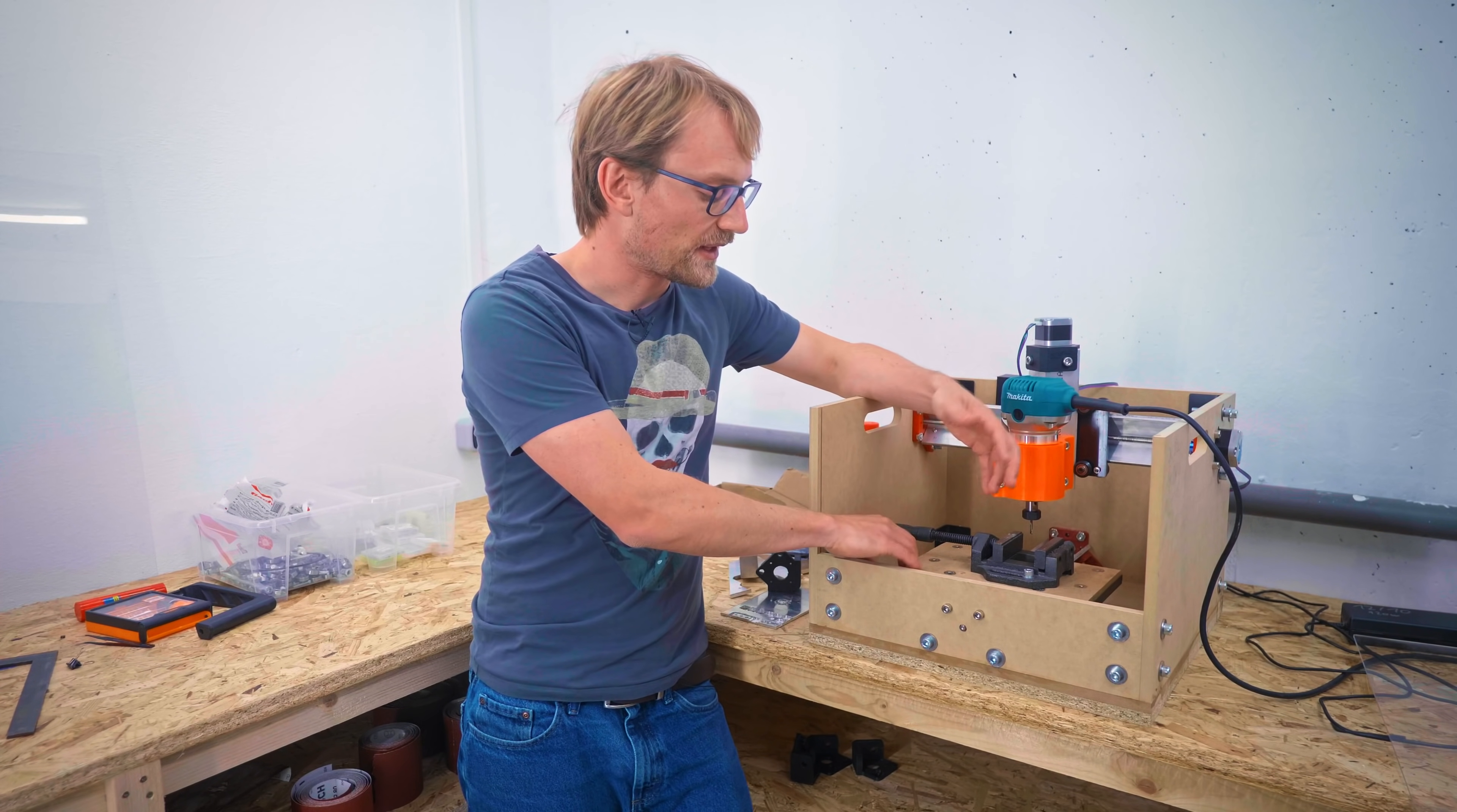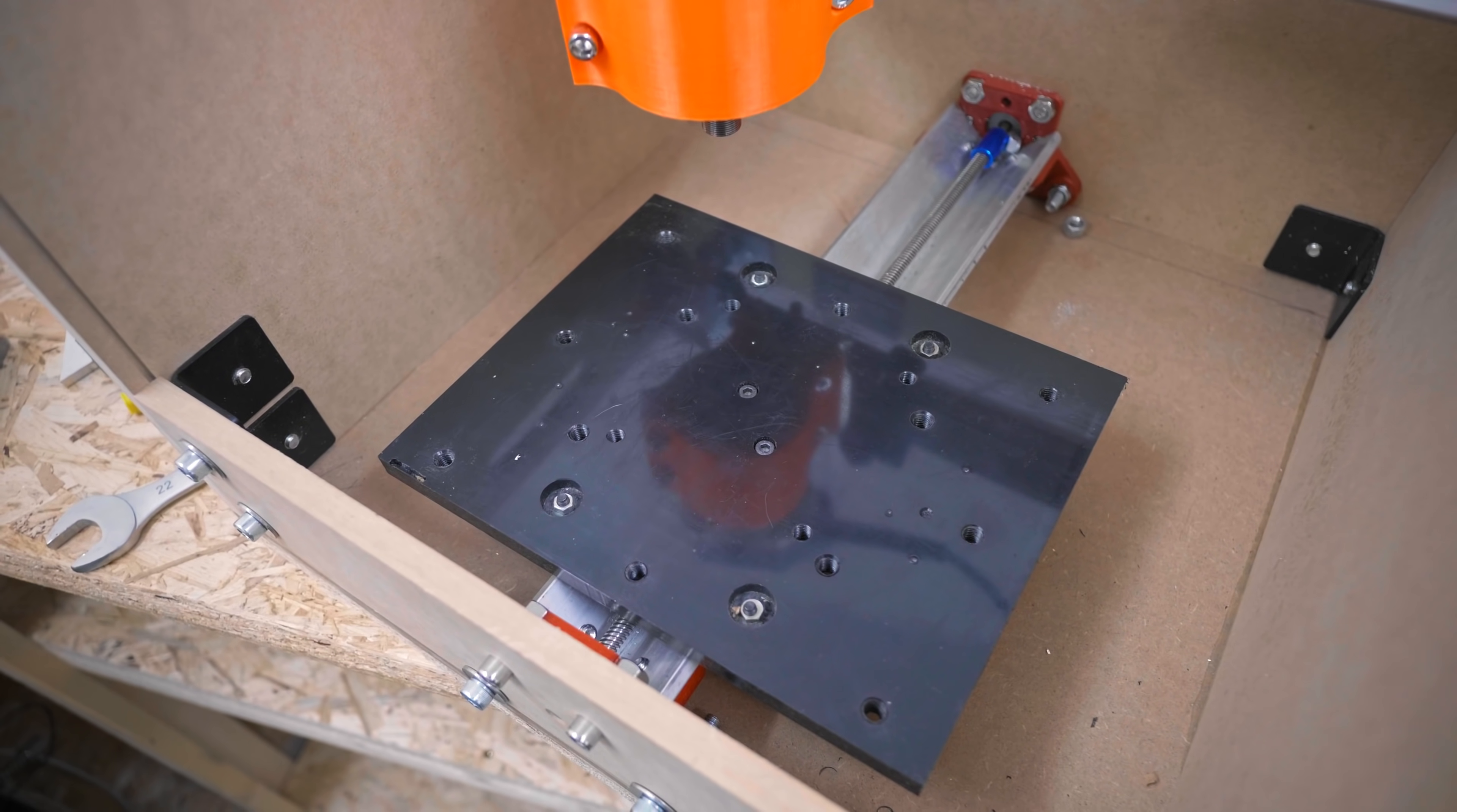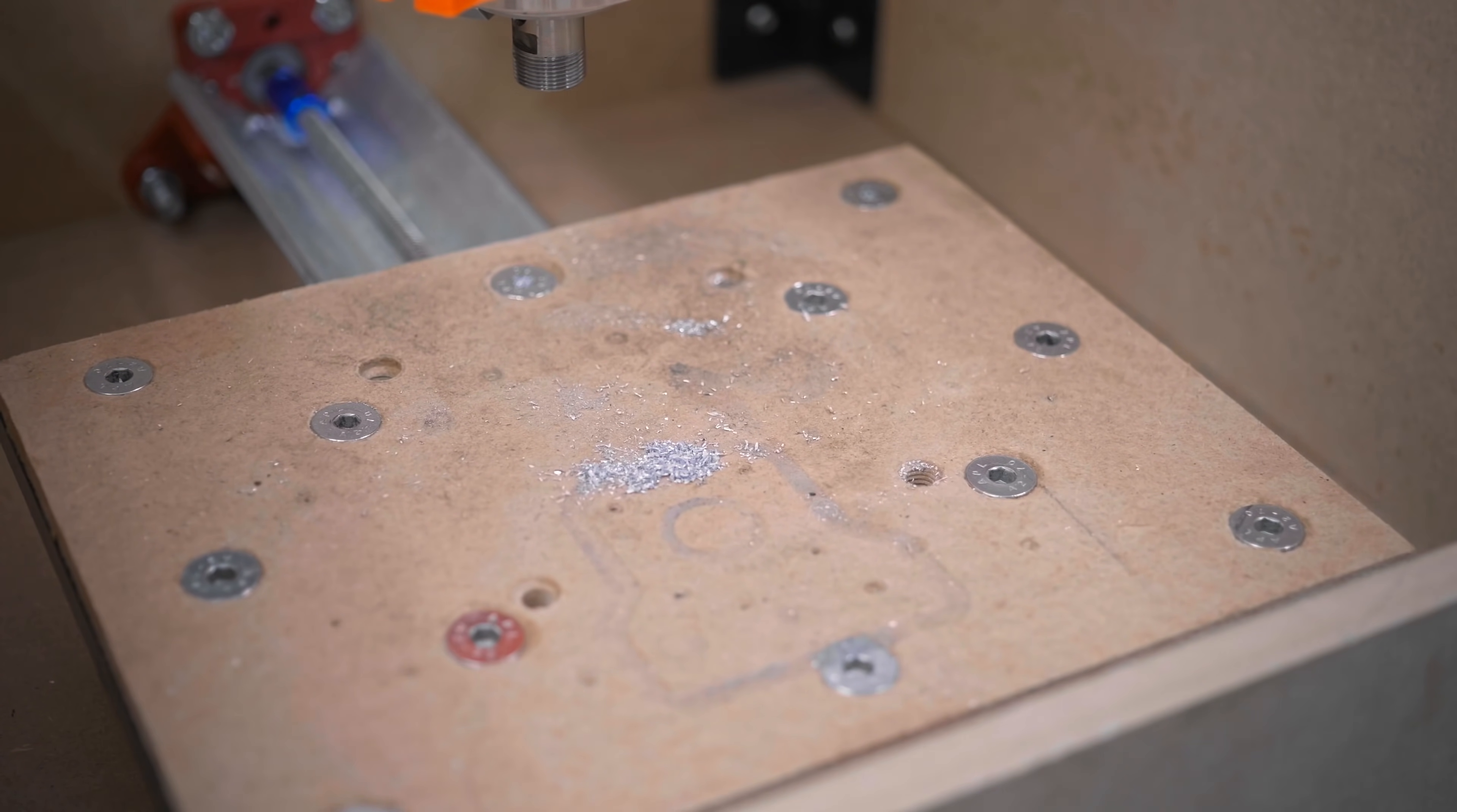Of course, you could tape something down to the stock delrin, but I wanted it a bit more secure, so I had Bob mill a few holes into itself, and I tapped them to M8 to screw down an MDF wasteboard properly. I've also got a few holes that I can use to bolt down a small little machine vise, like this.